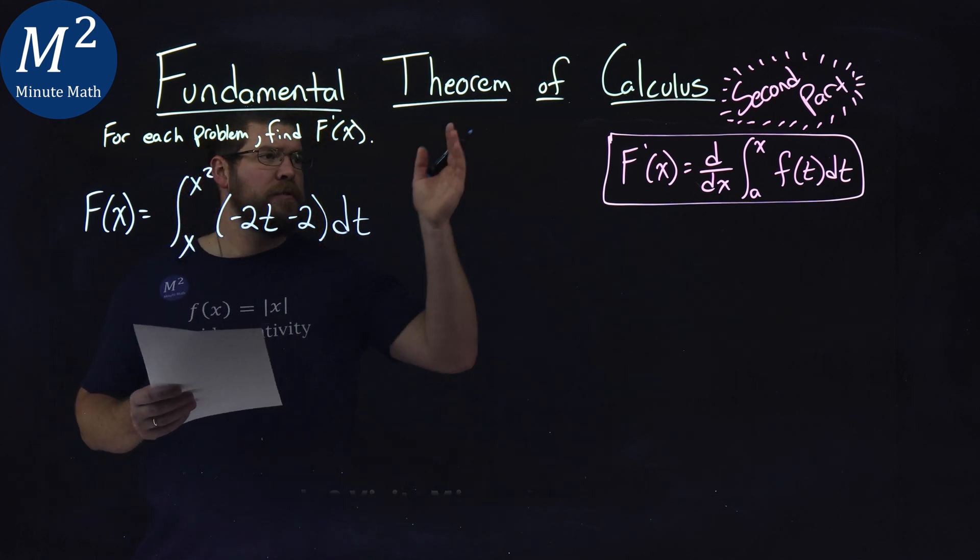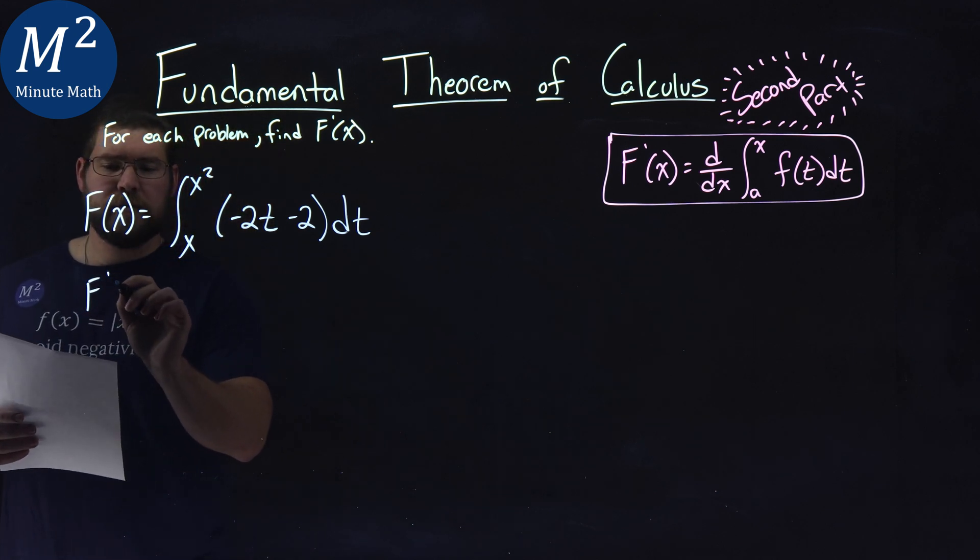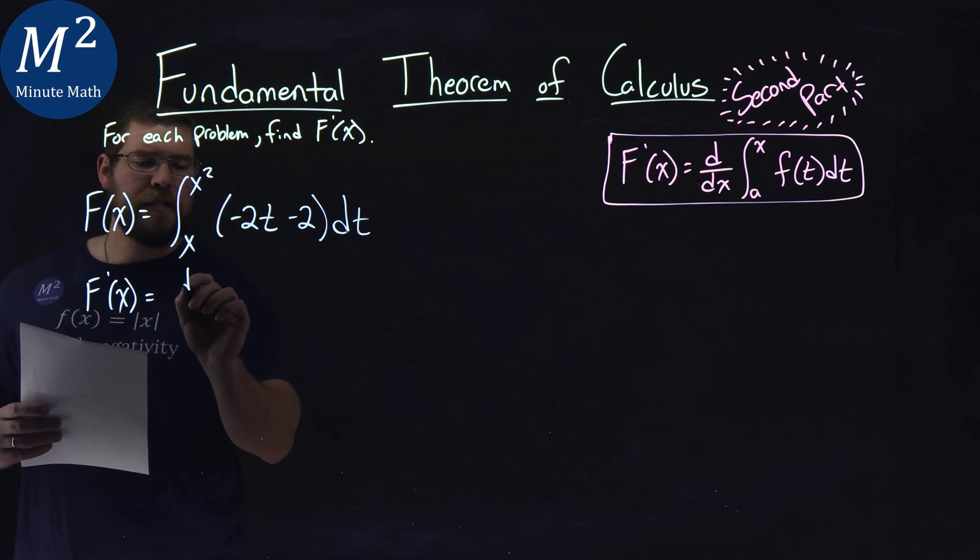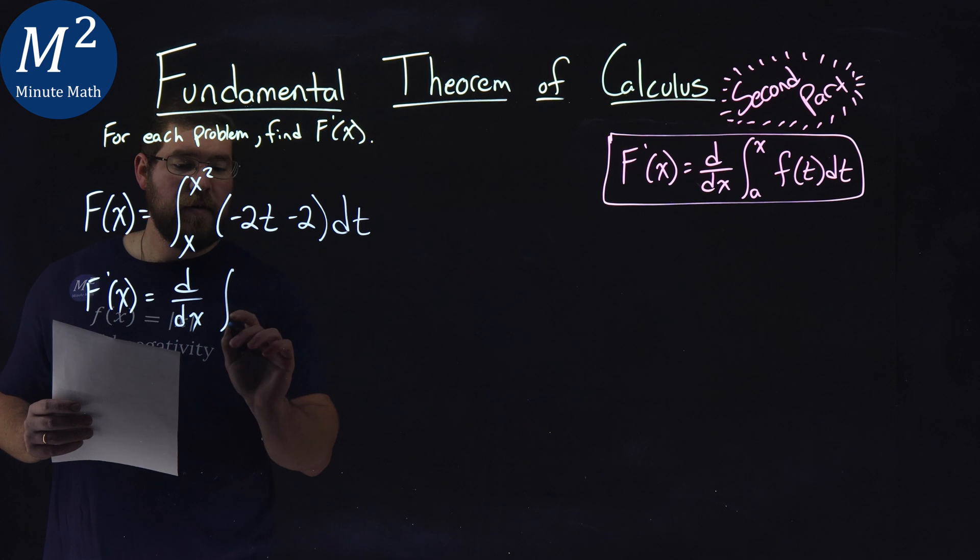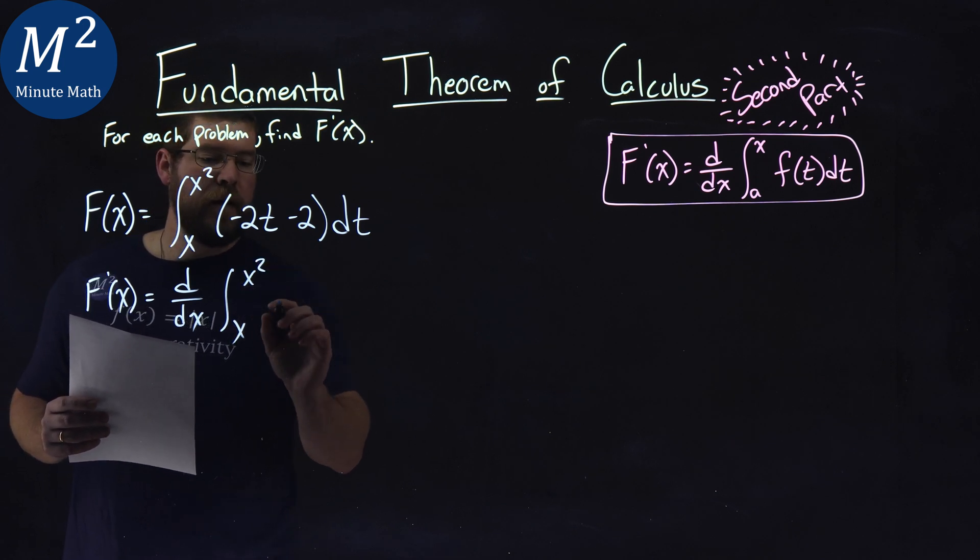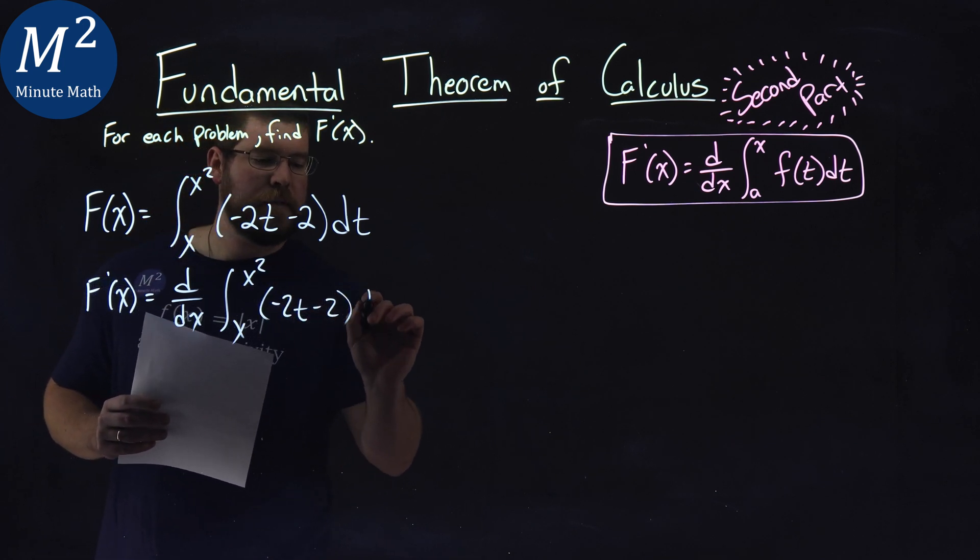What I want to do first is use my formula. f prime of x is equal to d/dx of the integral from x to x squared of negative 2t minus 2 dt.